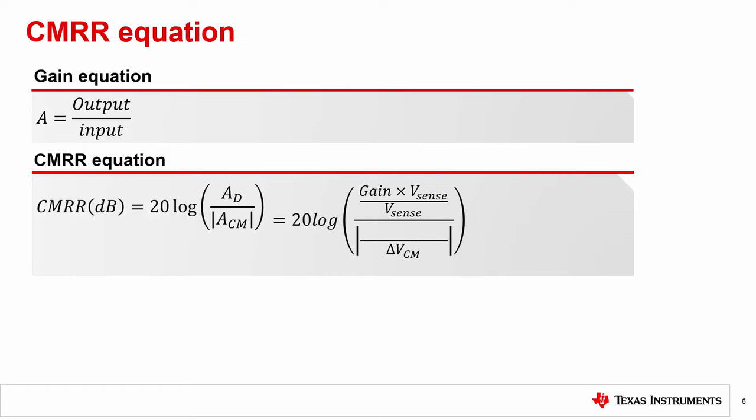The output for differential gain would be simply the internal amplifier gain multiplied by Vsense. For the common mode gain, the same amplifier gain is multiplied by the input offset produced by the common mode. After we reduce the equation by canceling Vsense terms and gain terms, we see a ratio of the change in VCM to the change in VOS.